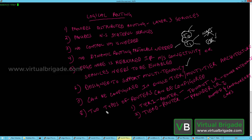The logical routers in NSX-Edge can be of two different types. The Tier1 logical router, often called the tenant logical router, is owned by the tenants where the tenant administrator can create and configure it. The Tier0 logical router, often called the provider logical router, is owned and configured by the cloud management platform providers.